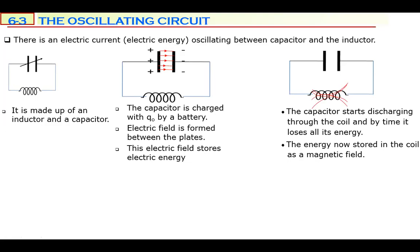When you connect a coil across the charged capacitor, it starts discharging through the coil. This discharge provides a current through the coil, and a current in a coil produces a magnetic field. The capacitor discharges completely through the coil, and by that time it loses all its energy — the energy is now in the coil in the form of a magnetic field.